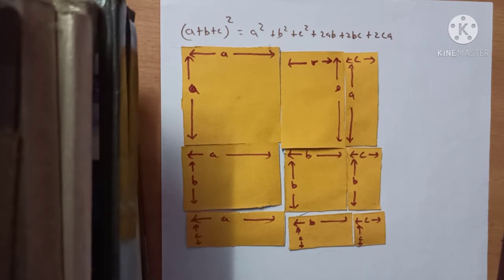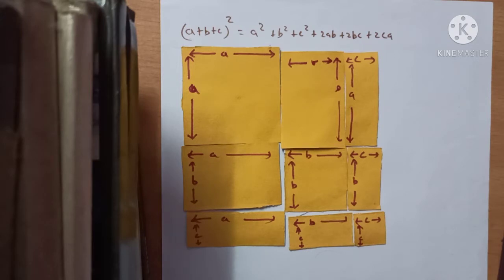Good morning students. Today we are going to do an activity where we prove the identity: a plus b plus c whole square is equal to a square plus b square plus c square plus 2ab plus 2bc plus 2ca.